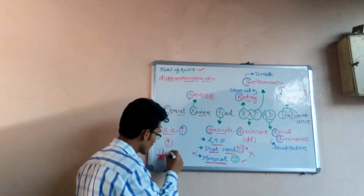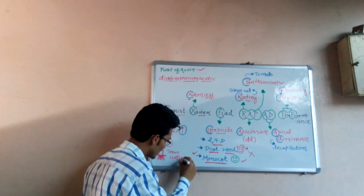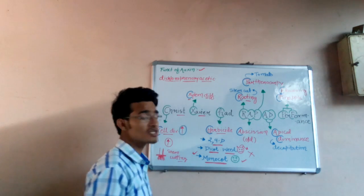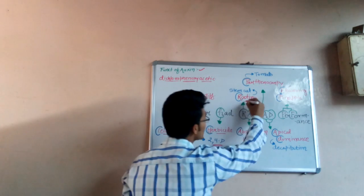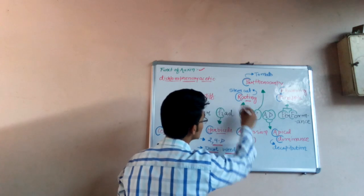That is the rooting or the initiation of root when you just bury a stem cutting in soil. That particular function, rooting or the initiation of rooting, is done by the auxins. So R means rooting.